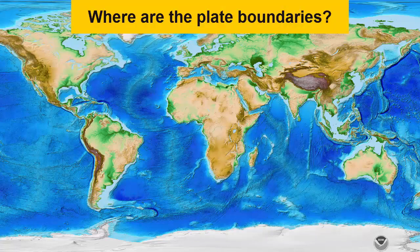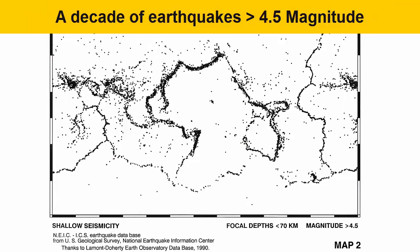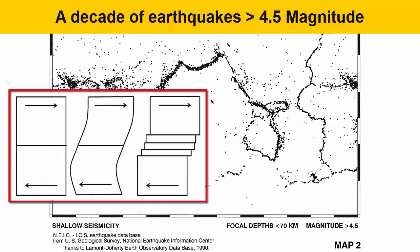Where can we find plate boundaries on the planet? The best way to see plate boundaries is to look for the major earthquakes. Earthquakes form when building stresses within the Earth's solid crust are released in a single instance of motion. These stresses build where plates are being stretched apart, pushed together, or slid beside each other.